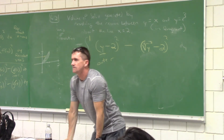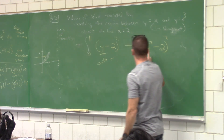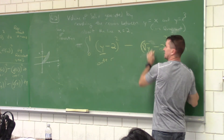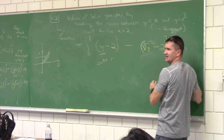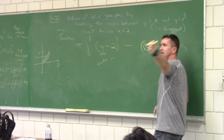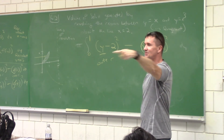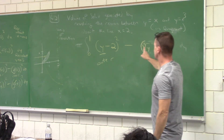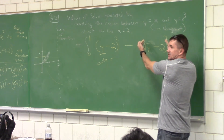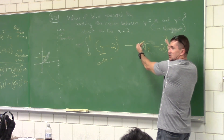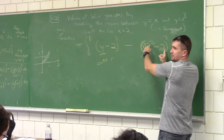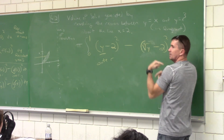Why did you square the cube root of y? Great catch — I should not have squared it. The correct expression is the cube root of y minus two, all as one expression — not squared separately. Thank you for catching that. That was a bad error on my part.